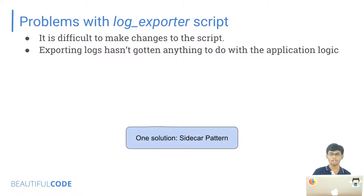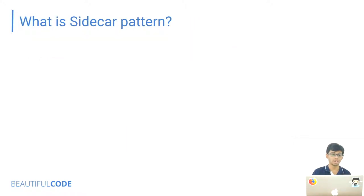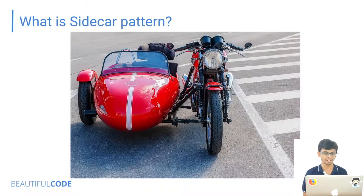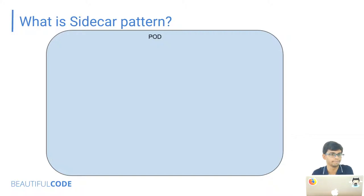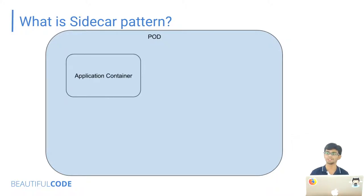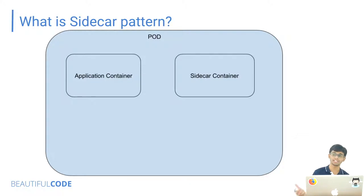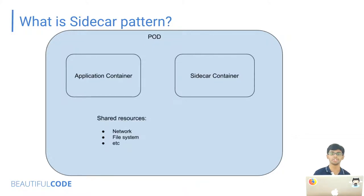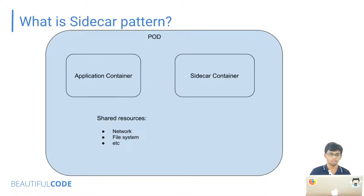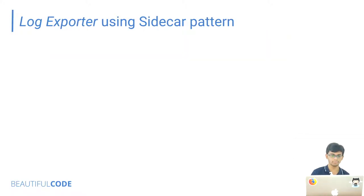When you want to make modifications, you have to do the changes in multiple places in multiple languages — that's the problem. One solution is the sidecar pattern. In a Kubernetes pod, we have an application container with all the application logic, and along with it we deploy another container called a sidecar container. The key specialty of this setup is that both the application and sidecar container can share common resources such as network, file systems, and memory.